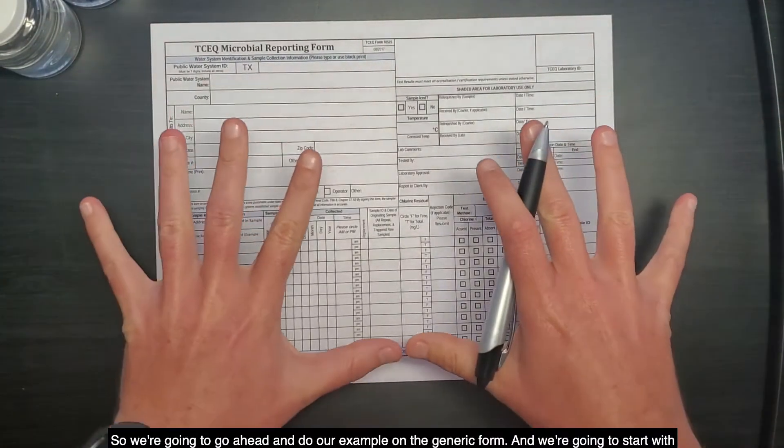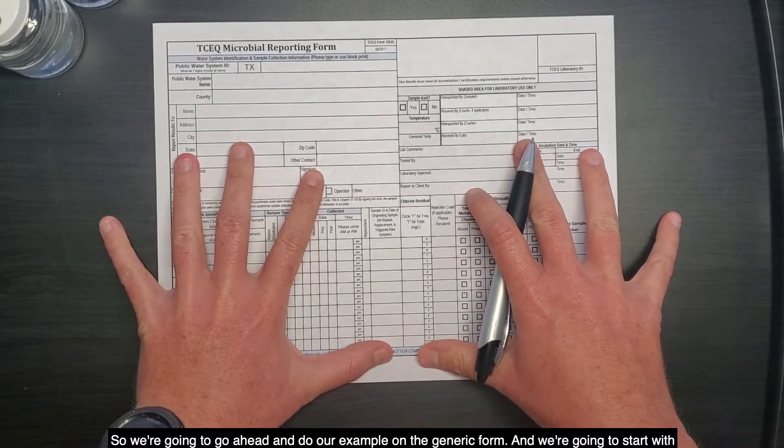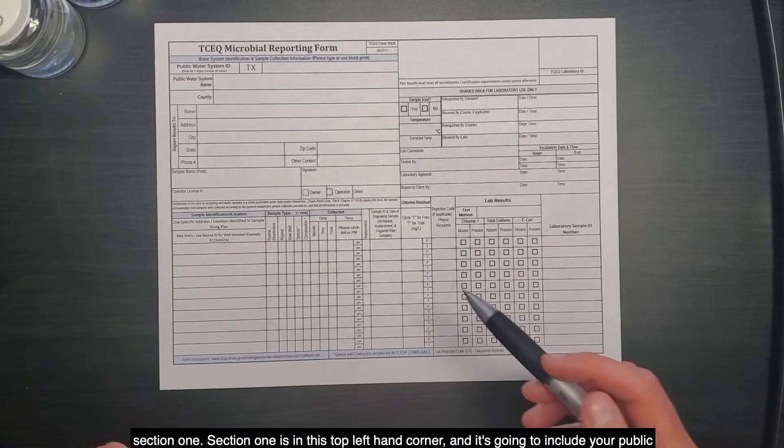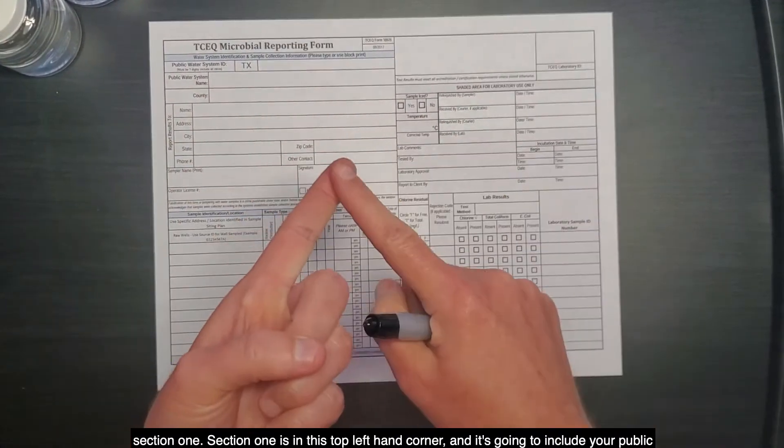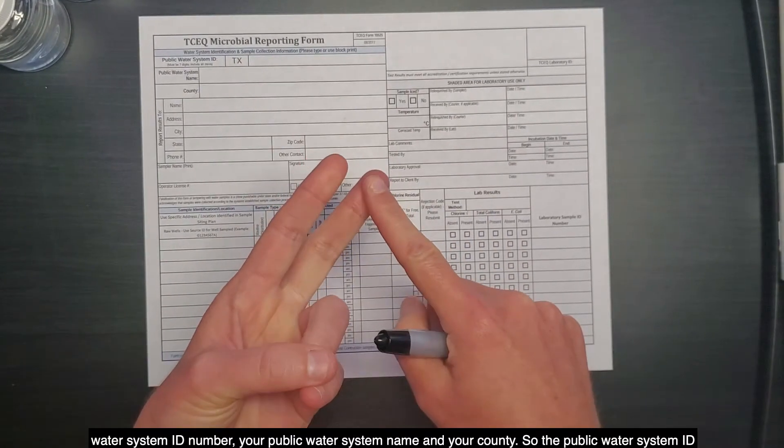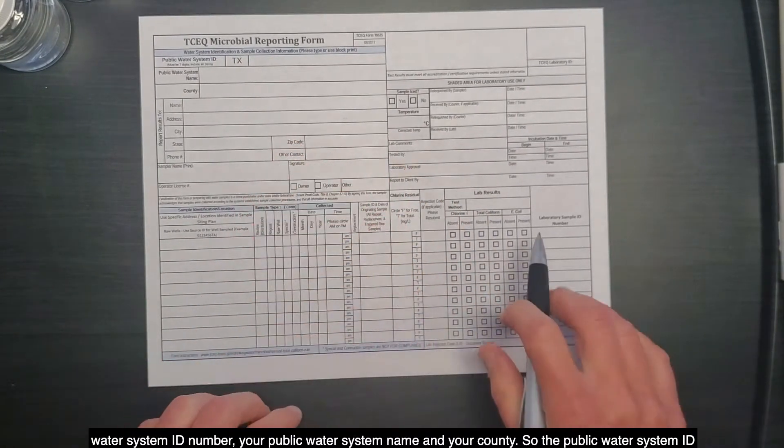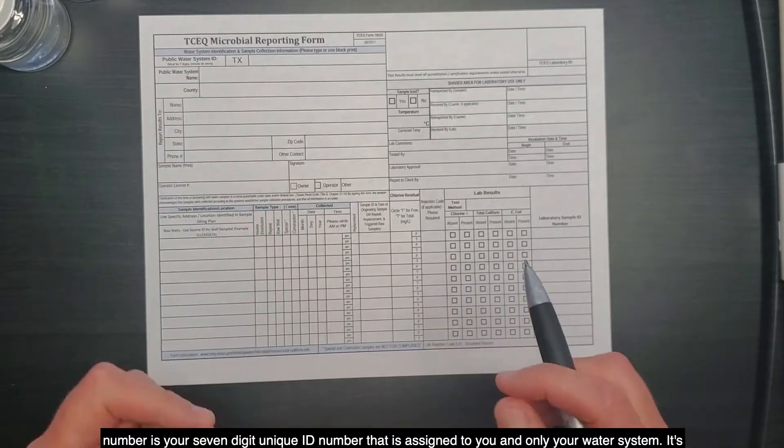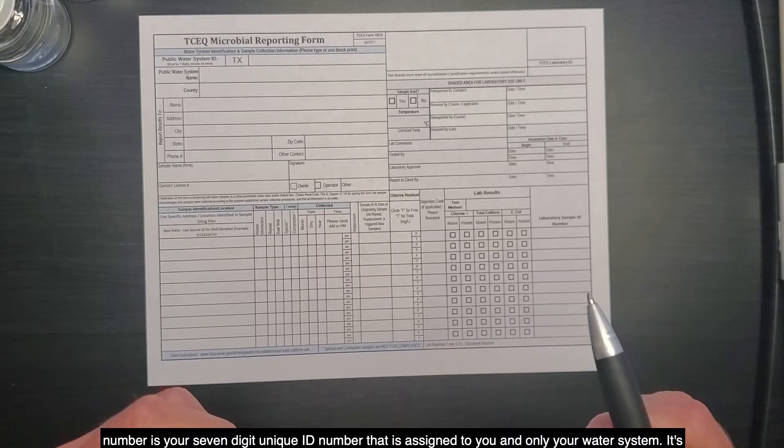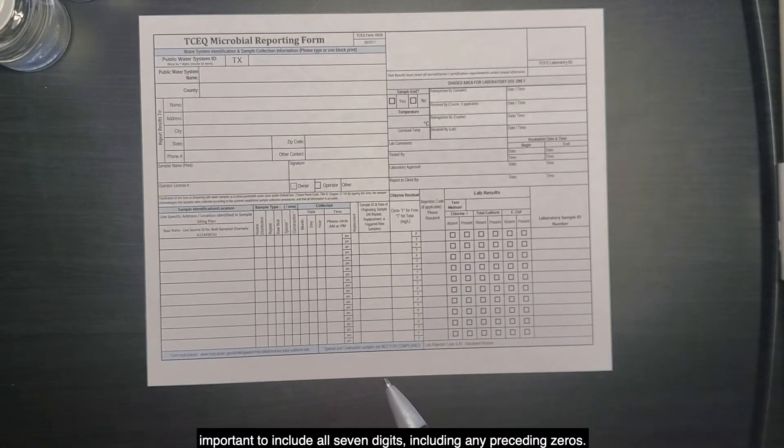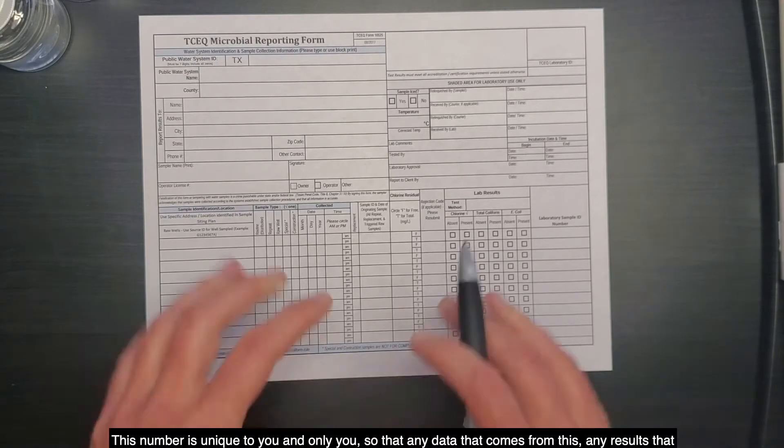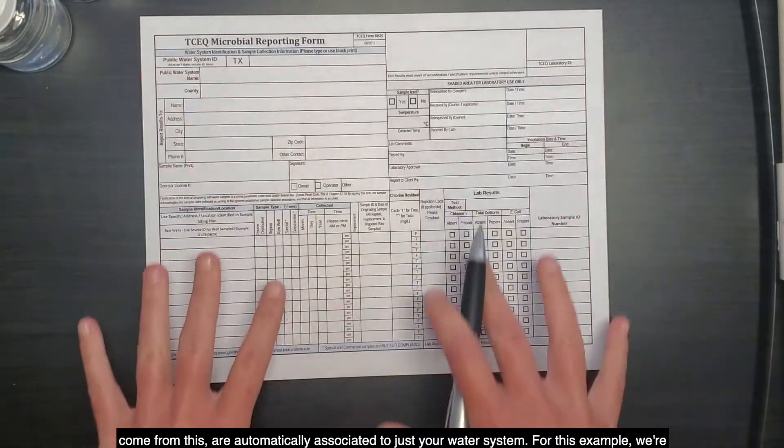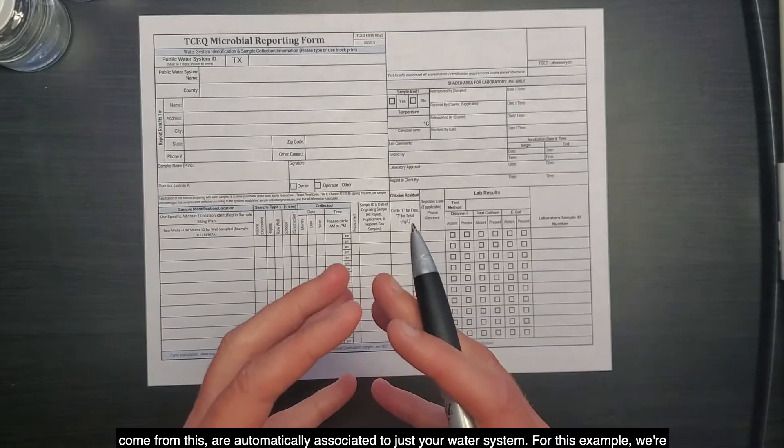So we're going to go ahead and do our example on the generic form, and we're going to start with Section 1. Section 1 is in this top left-hand corner, and it's going to include your Public Water System ID number, your Public Water System name, and your county. So the Public Water System ID number is your seven-digit unique ID number that is assigned to you and only your water system. It's important to include all seven digits, including any preceding zeros. This number is unique to you and only you, so that any data that comes from this, any results that come from this, are automatically associated to just your water system.